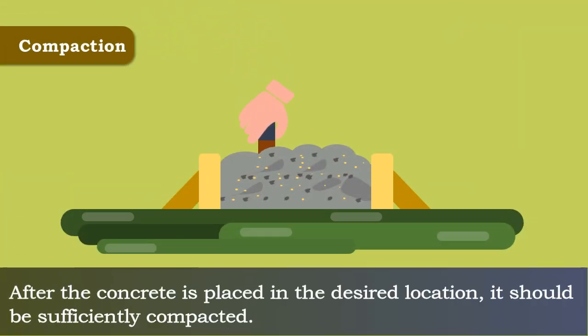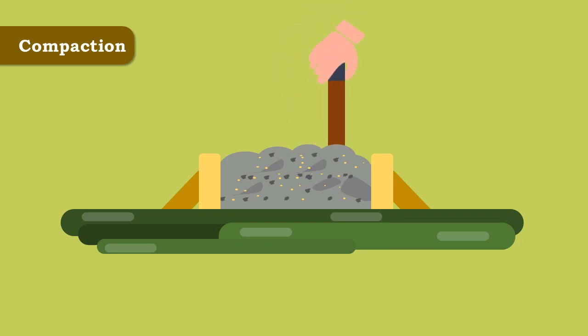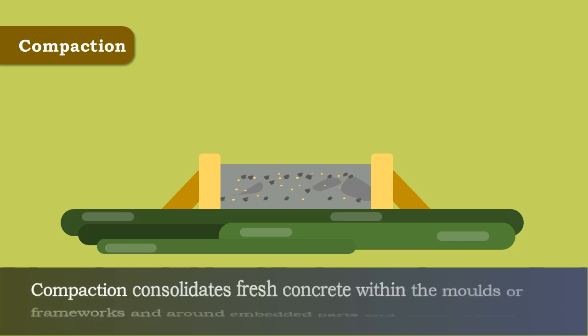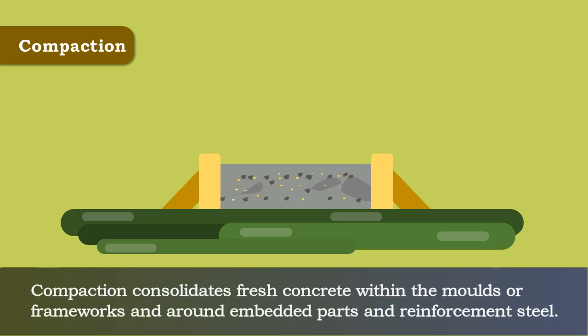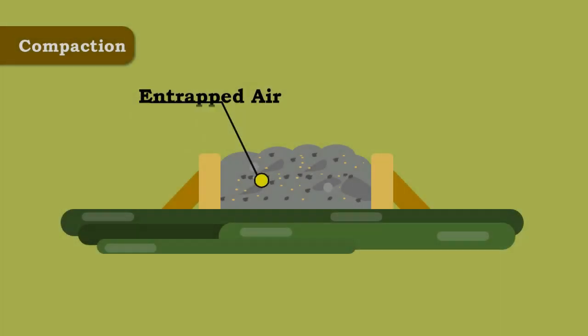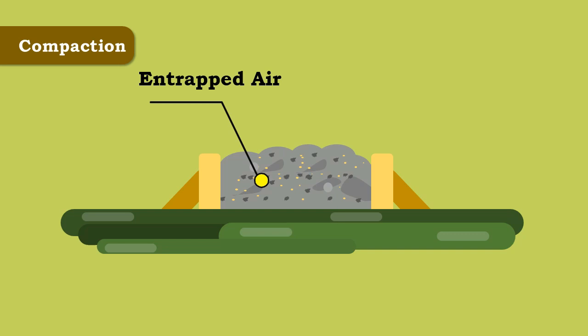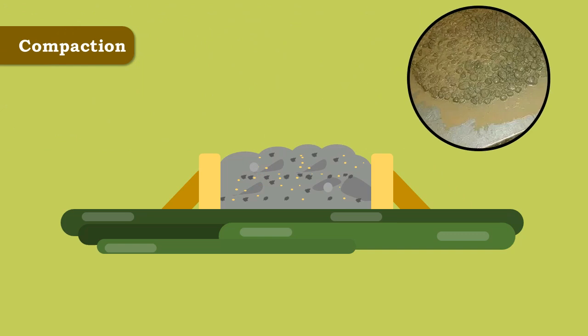Compaction. After the concrete is placed in the desired location, it should be sufficiently compacted. Compaction consolidates fresh concrete within the moulds or frameworks and around embedded parts and reinforcement steel. As there will be a considerable quantity of air entrapped in concrete during its production and also there will be a possibility of segregation of concrete. Both of these may affect the quality of concrete.